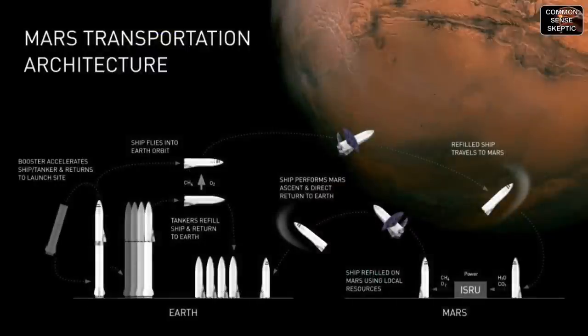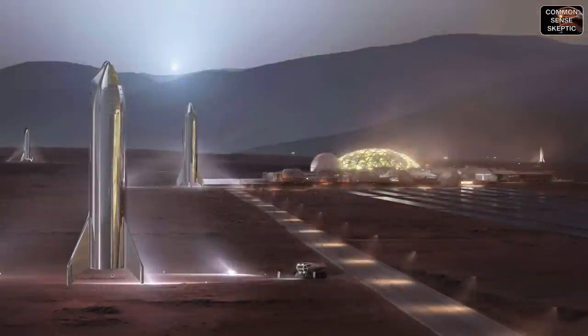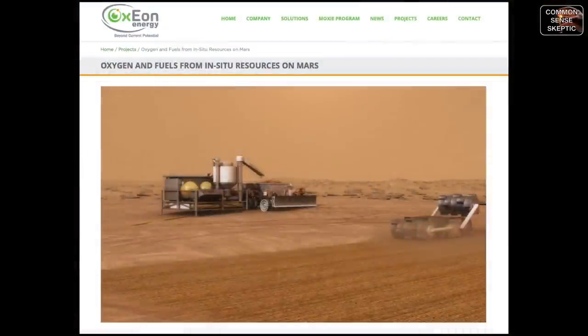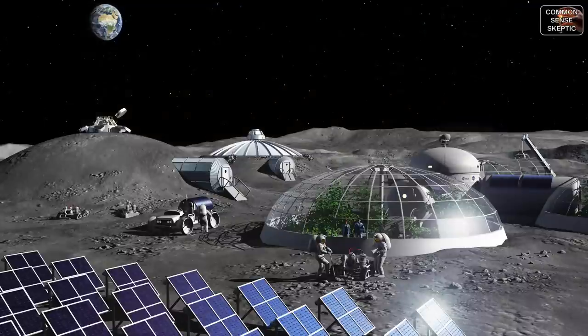However, what we have described in this episode is the smallest possible facility that would allow colonists to return to Earth after 500 days on Mars. Although this episode dealt with the in-situ fuel creation requirements for Starship — mainly because that ship is the only one being promoted as a Mars colony delivery and return vehicle — the same requirements would be true for any vehicle making similar claims on Mars or on the Moon.